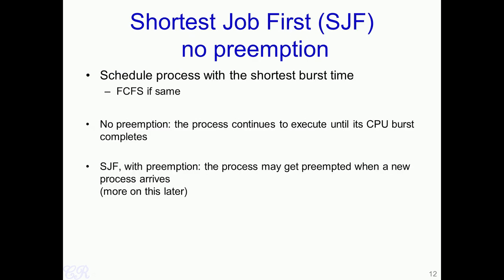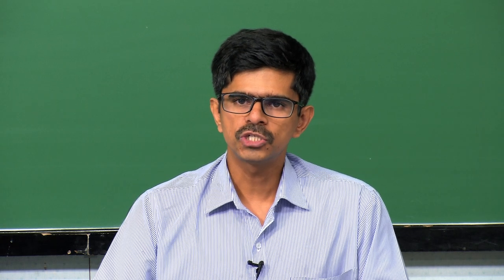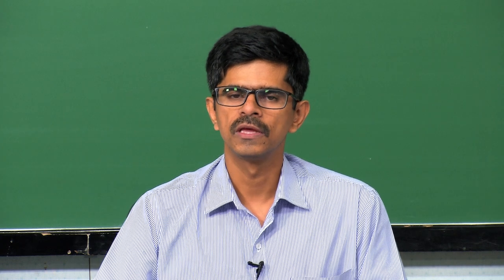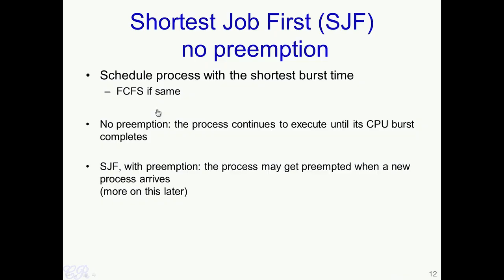Now let us look at the shortest job first, or SJF, scheduling algorithm. In this algorithm, the job or process with the shortest CPU burst time is scheduled before the others. If more than one process has the same CPU burst time, standard FCFS scheduling is used. There are two variants: SJF with no preemption, where the process continues to execute until its CPU burst completes, and SJF with preemption, where a process may be preempted when a new process with a shorter burst arrives.